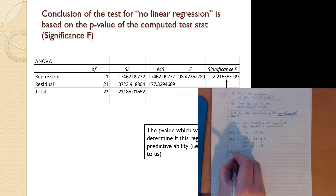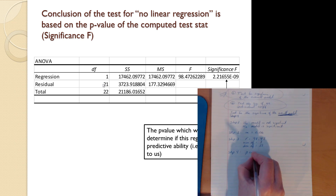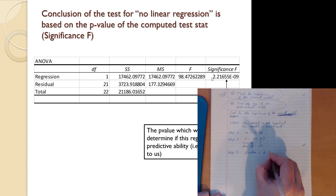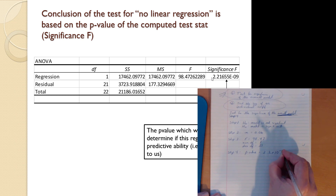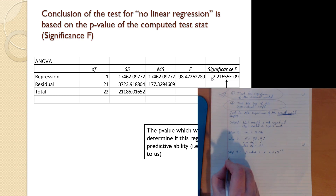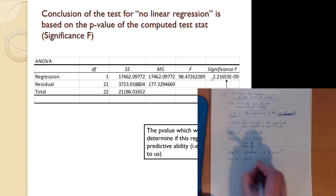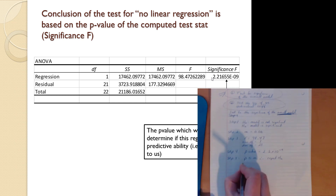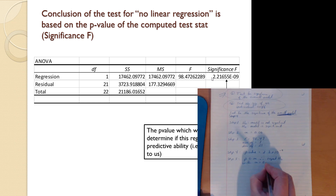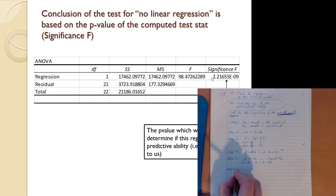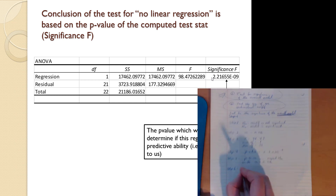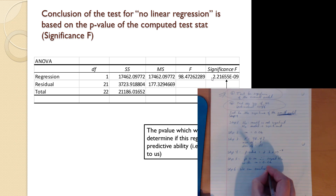Step four is the p-value. On Excel, they call it 'significance F,' which is the p-value for the overall model. It comes out to be times 10 to the minus 9 — a very, very small p-value. That p-value is definitely less than any reasonable alpha. Therefore, we reject H-naught with an alpha of 0.06, and we can conclude that the model is significant.